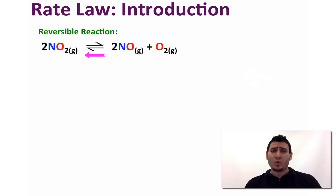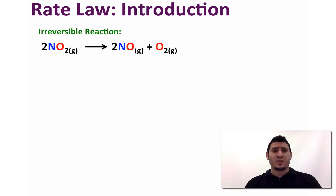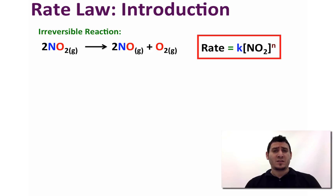All reactions are reversible, and therefore products will accumulate with time and the reverse rate will become important. The change in concentration of the reactant will depend on both the forward and the reverse rate of the reaction. If we choose conditions where the reverse reaction can be neglected, the rate expression will depend only on the concentration of the reactants.